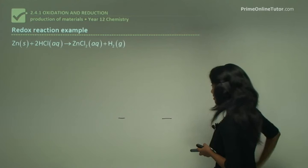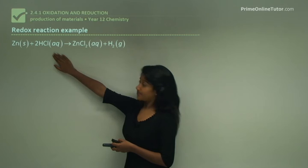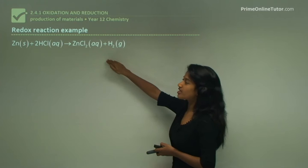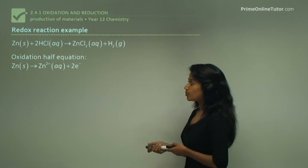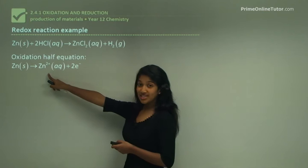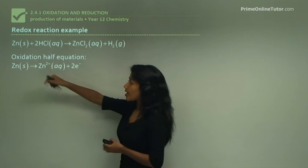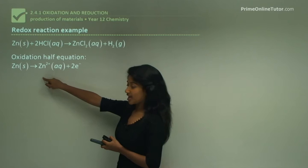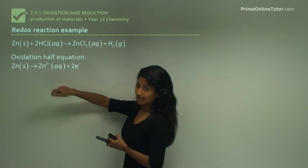For example, zinc reacting with hydrochloric acid: Zn + HCl → ZnCl₂ + H₂. This is a redox reaction, so there is both a reduction and an oxidation reaction happening. Looking at the oxidation half equation: zinc oxidizes to form zinc ion (Zn²⁺) and two electrons. The zinc ion comes from zinc chloride, which is an ionic compound where zinc has a 2+ valency. A reduction half equation is happening simultaneously.